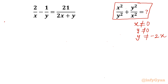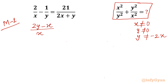Now I will solve this question in two different ways. Method number 1 is using LCM. Taking LCM on the left side, I will write (2y minus x) over (x times y) equal to 21 over (2x plus y).